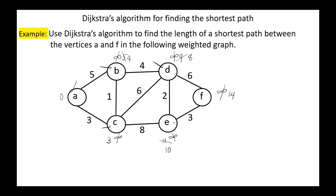We have the remaining vertices E and F. The vertex with minimum cost is E. E is connected to F: 10 plus 3 equals 13, less than 14, so we update this value to 13. Now we are done with E; we mark it as visited. The only remaining vertex is F, so we are done.